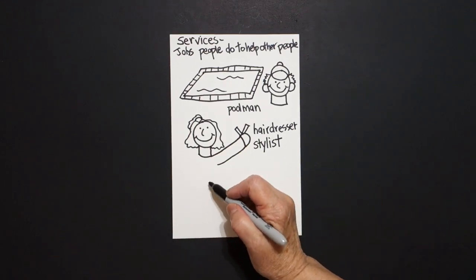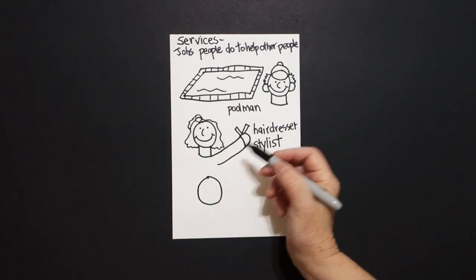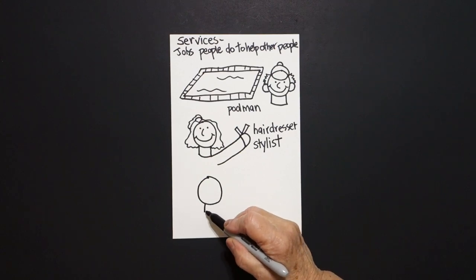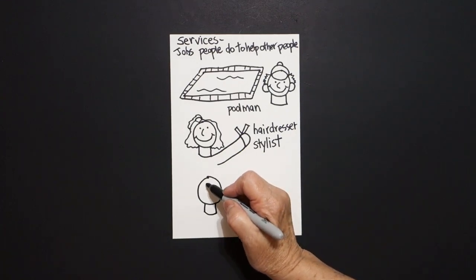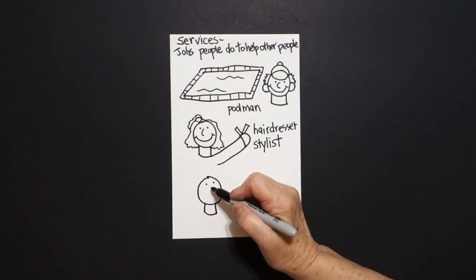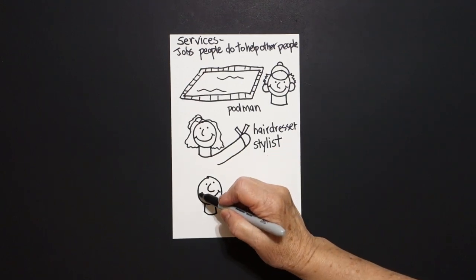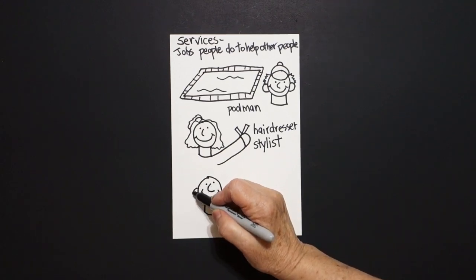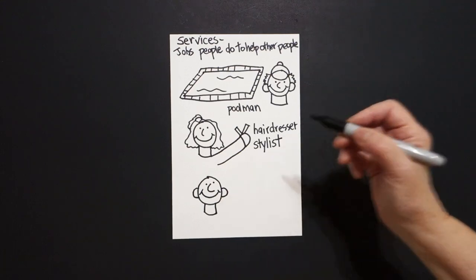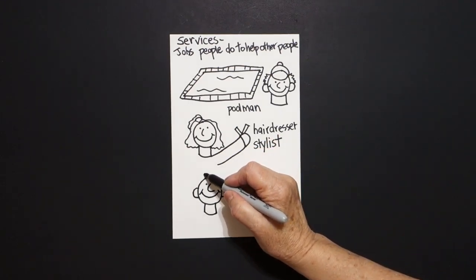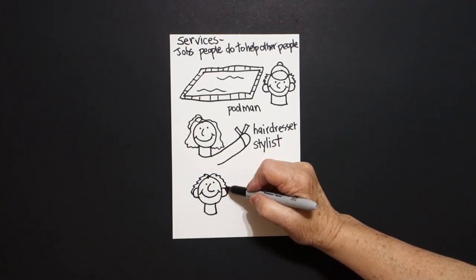Now come down to the bottom. Put a dot, curve line, connect. Straight line down, slightly curve line over, straight line down, connect. Come inside, dot, dot, curve line, big curve line, little curve line, little curve line. Curve line out, in on the left. Curve line out, in on the right. Come back to the top, wavy, wavy, wavy, wavy line on the left, wavy, wavy line on the right.